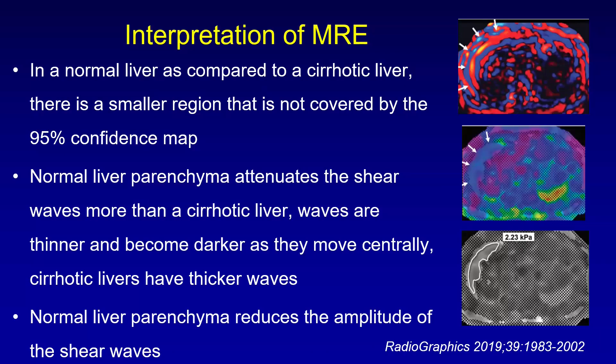In a normal liver, the parenchyma attenuates shear waves more than a cirrhotic liver, so the waves are thinner and become darker as they move centrally; cirrhotic livers have thicker waves. If the checkerboard is covering most of the liver parenchyma in a normal liver acquisition, this is acceptable — it reflects the inherent property of normal liver parenchyma, not a technical failure — and you should draw your ROI over whatever liver area is available.